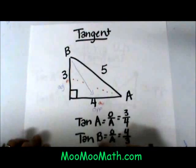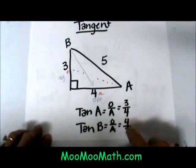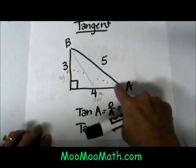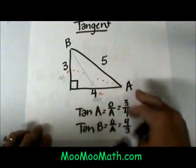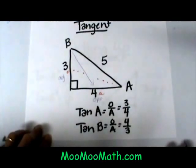So the tangent of B is 4 over 3 whereas the tangent of A is 3 over 4. So you can see that they are just reciprocals of one another.